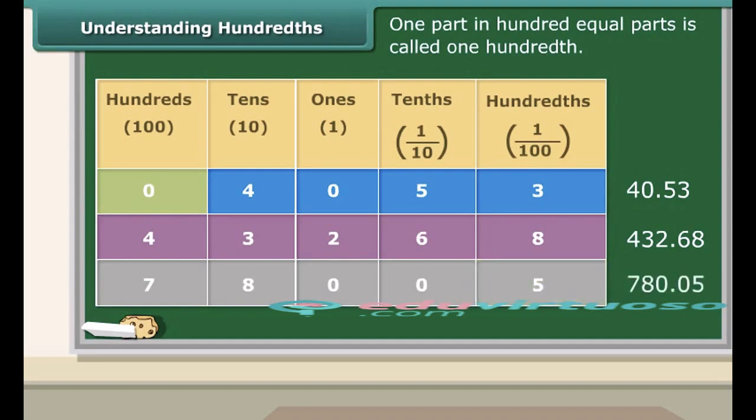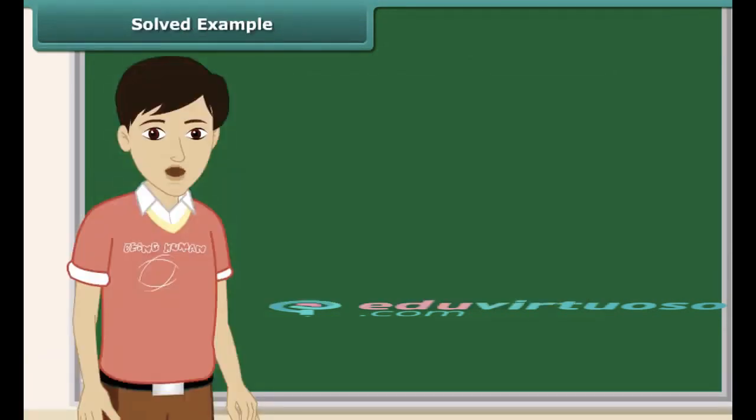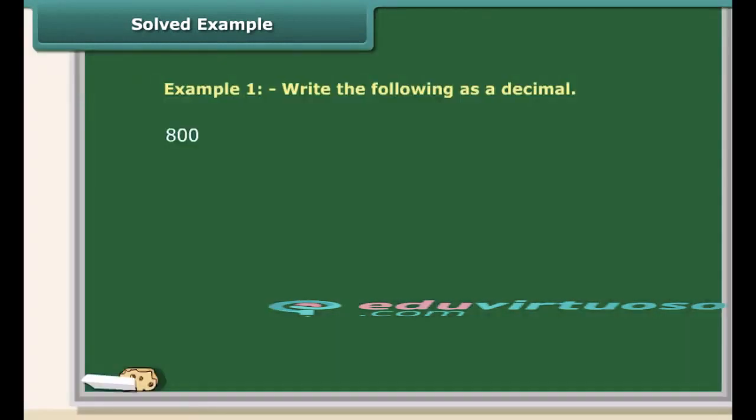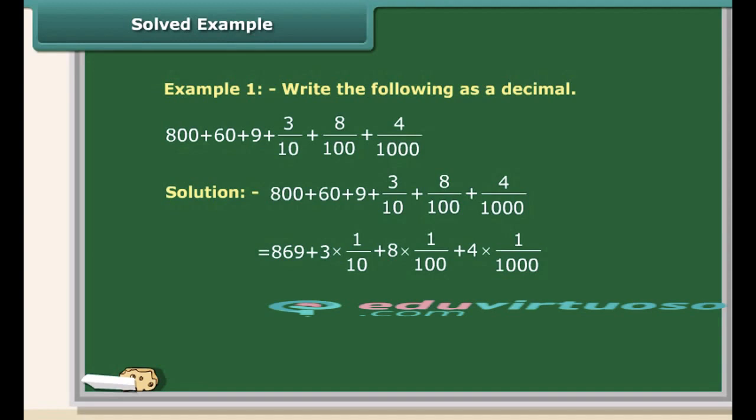We can extend the place value table further from 100 to 1000. Let us test our understanding by solving some questions. Write 800 plus 60 plus 9 plus 3 tenths plus 8 hundredths plus 4 thousandths as a decimal. 800 plus 60 plus 9 is 869. 3 tenths plus 8 hundredths plus 4 thousandths is 0.3 plus 0.08 plus 0.004, which adds up to 0.384.